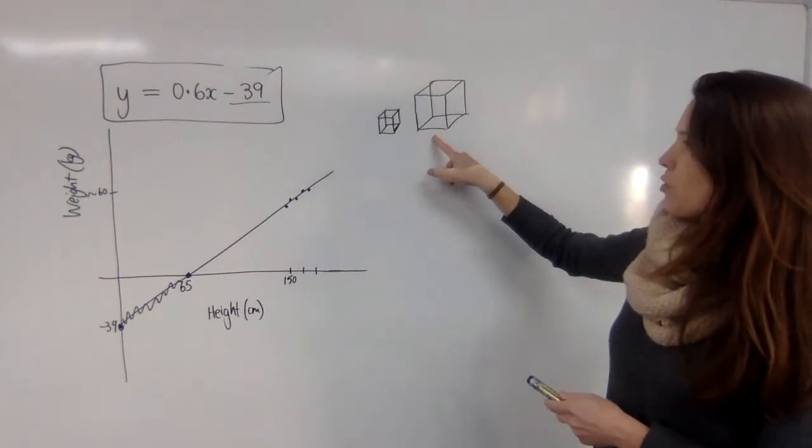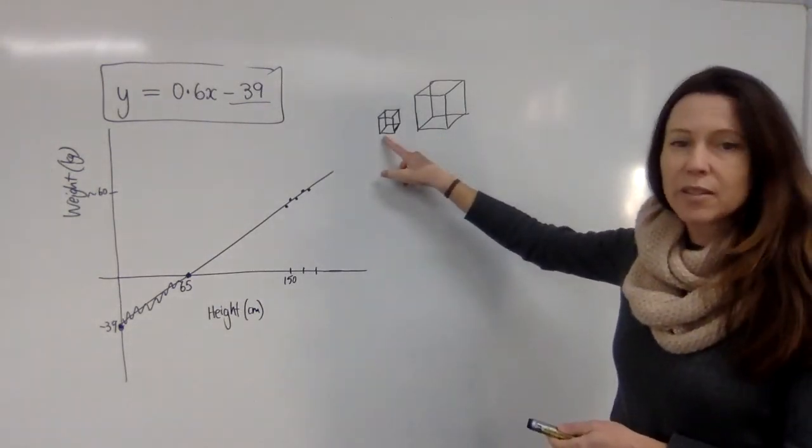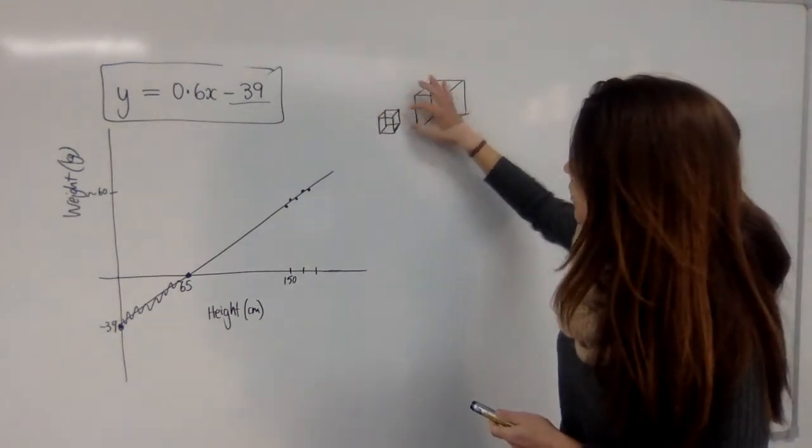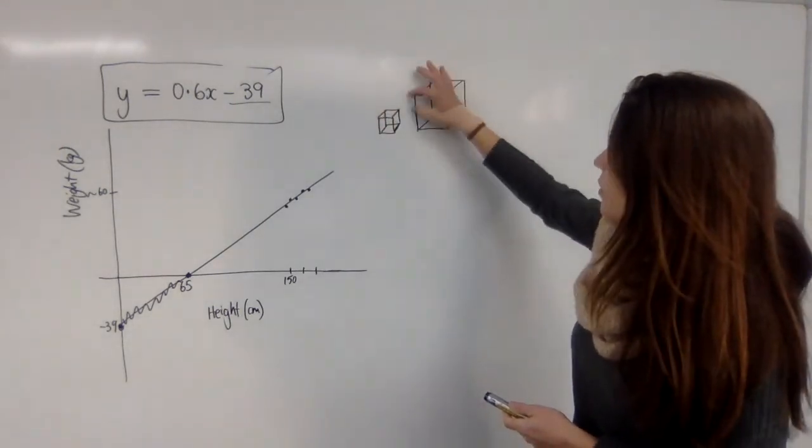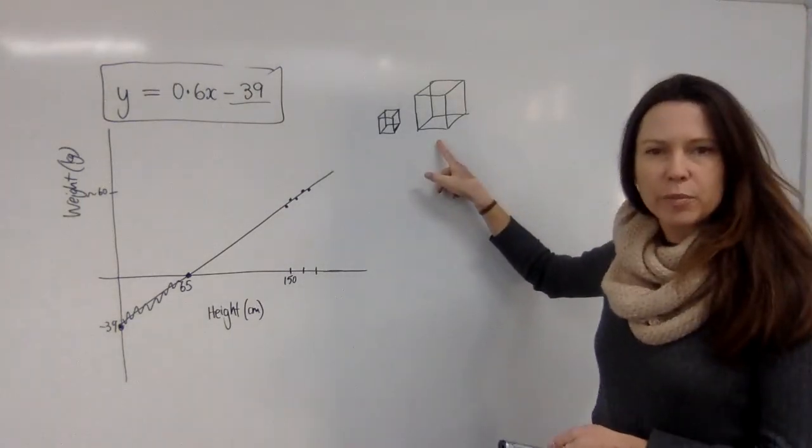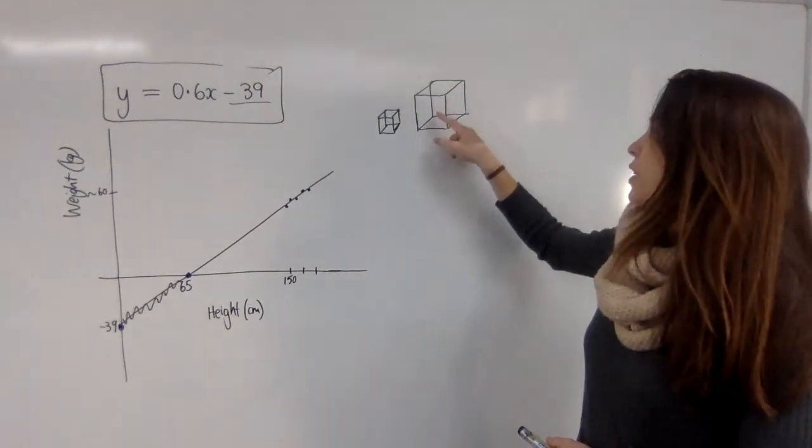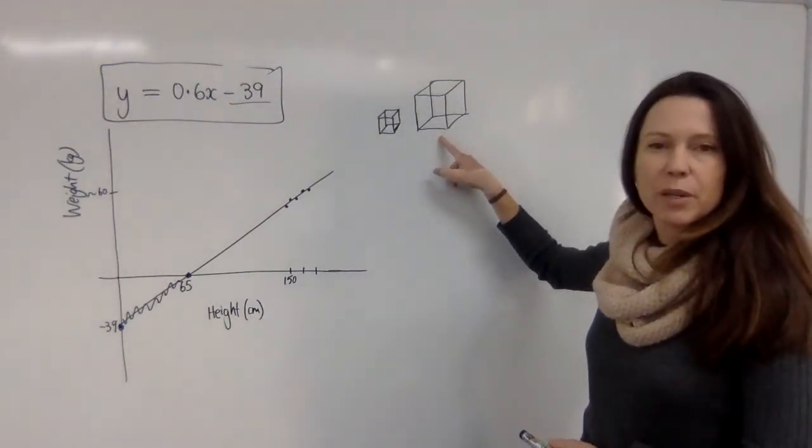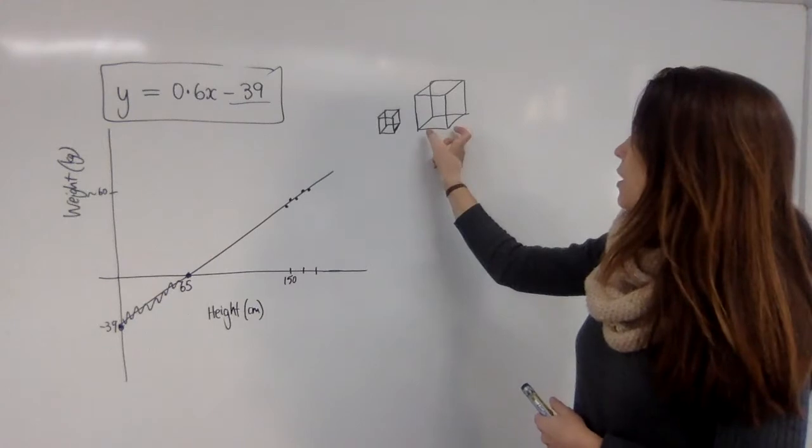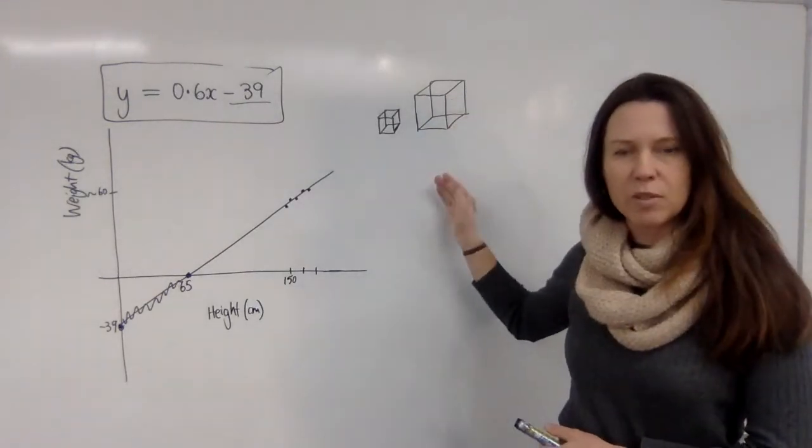This cube that I've drawn has actually got leg side lengths that are twice as long as this cube. You can see that because if I hold that up there you can see that the side length is roughly double. But how much more volume does this cube have than this one? Well you would fit eight of these little cubes into this big one, and that's because it's not only twice as wide, it's twice as tall and twice as deep, and two times two times two is eight.